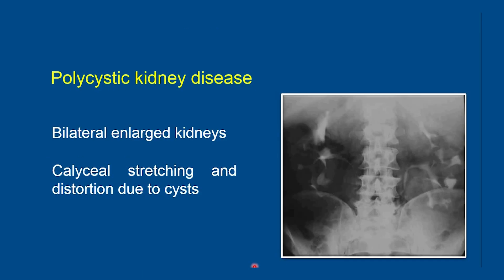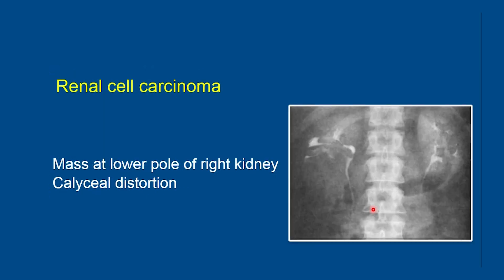This is a case of polycystic kidney in which we can see bilaterally enlarged kidneys spanning the height of more than three vertebrae, with caliceal stretching and distortion due to the cysts. This is a case of renal cell carcinoma in which there is a mass at the lower pole of the right kidney causing mass effect on the caliceal system as well as distortion of the calices; the left kidney and caliceal system show normal appearance.